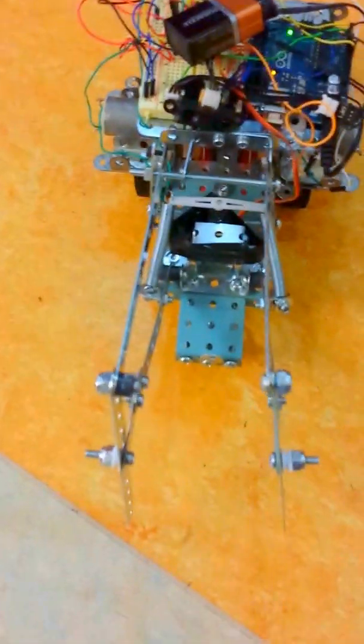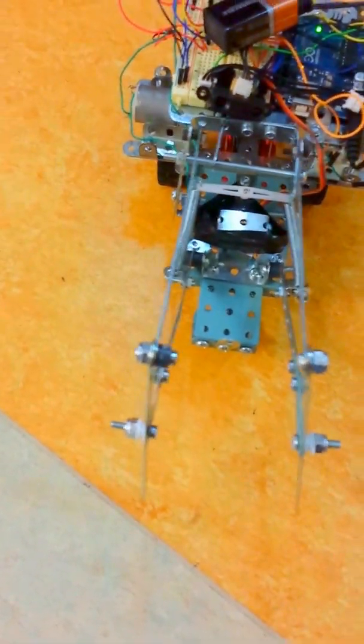Team Sprocket Mech 101 at Stony Brook University. This project uses two DC motors to drive two wheels that have a good gear ratio to allow for torque.